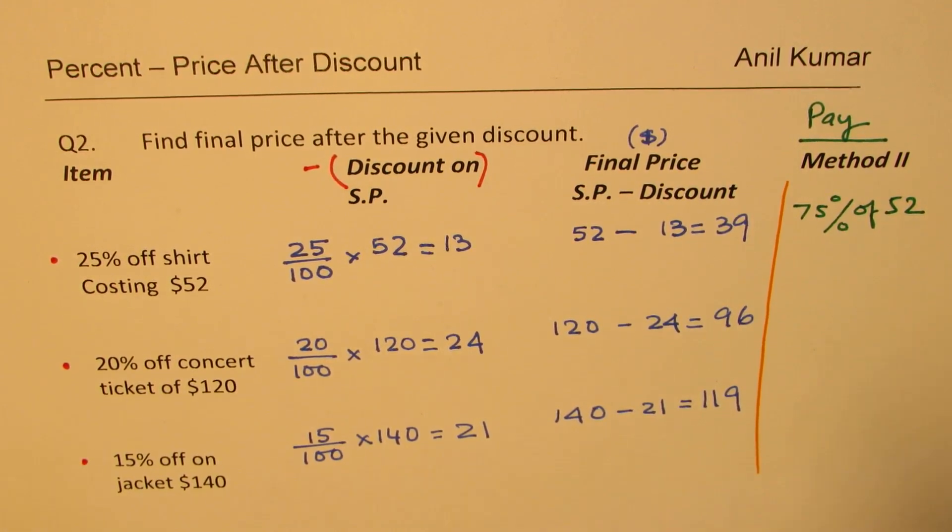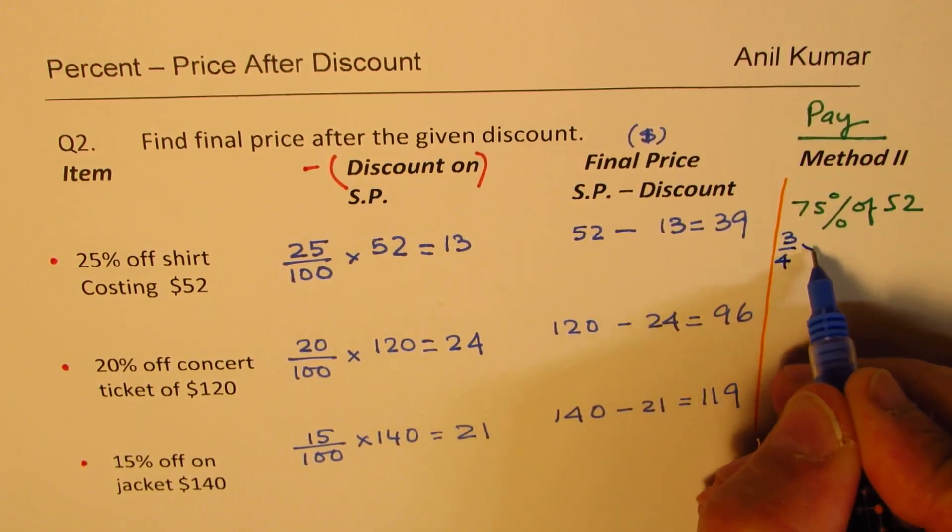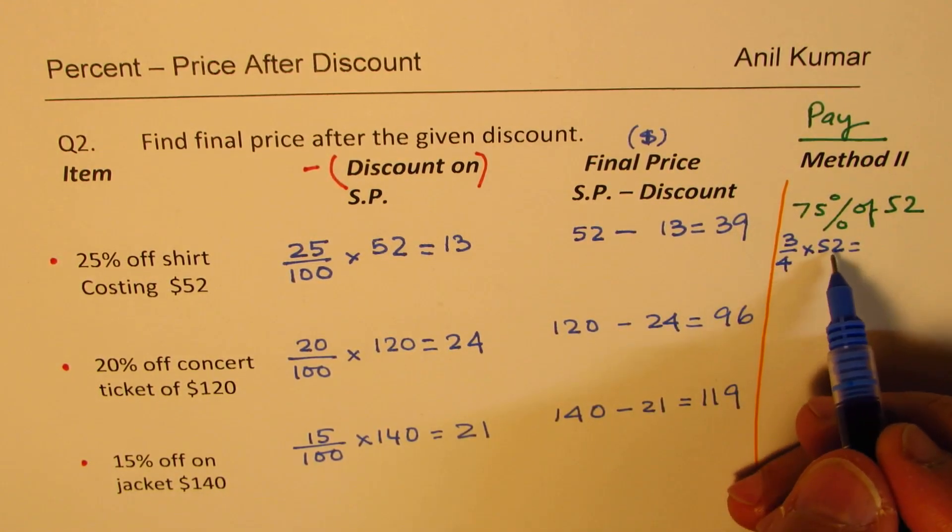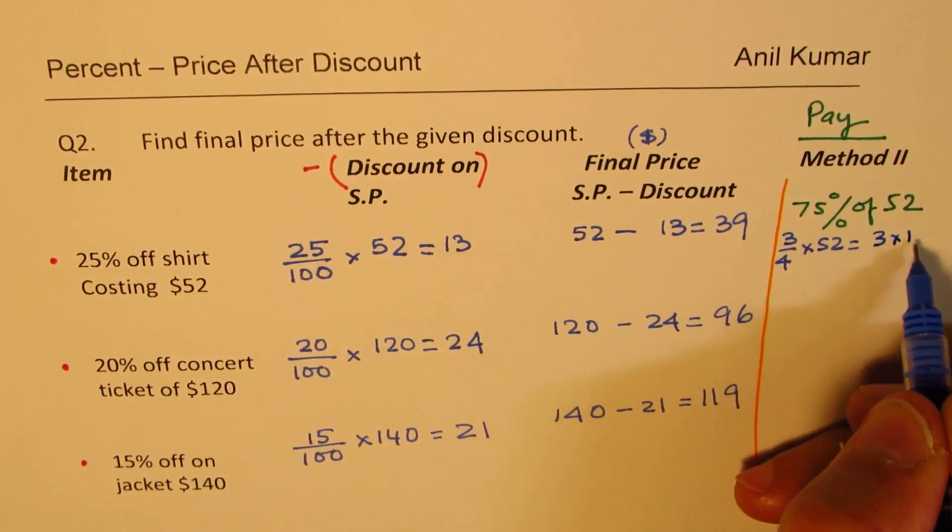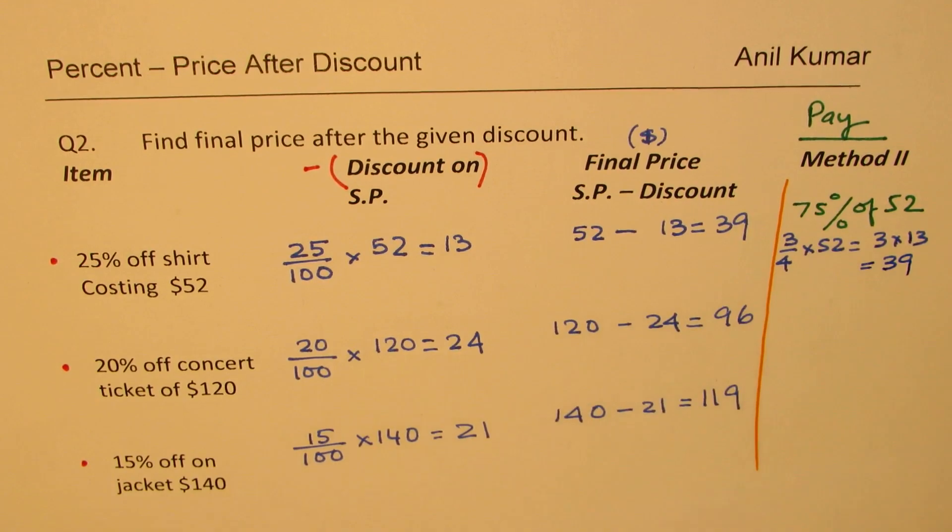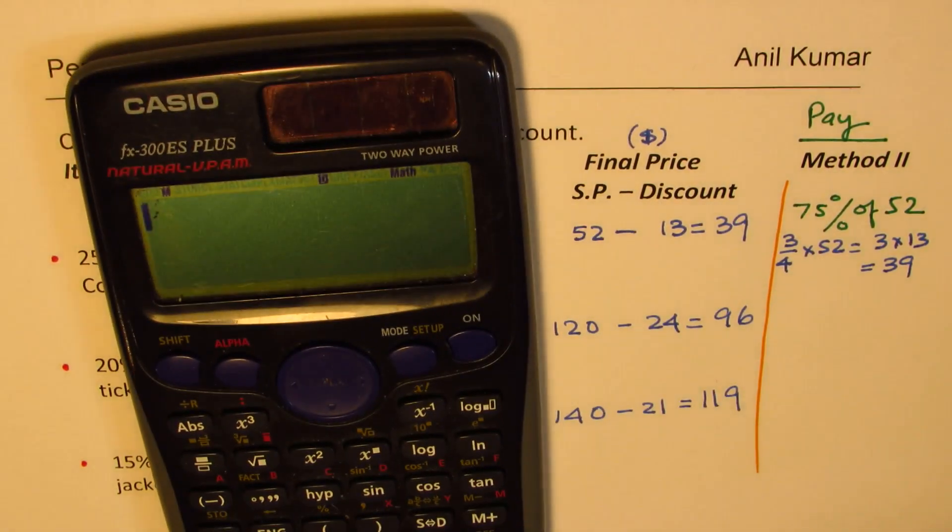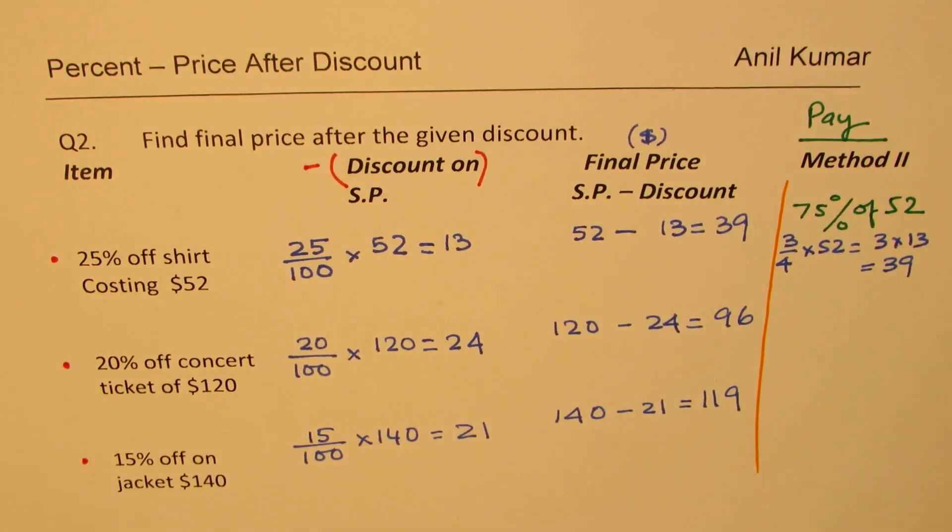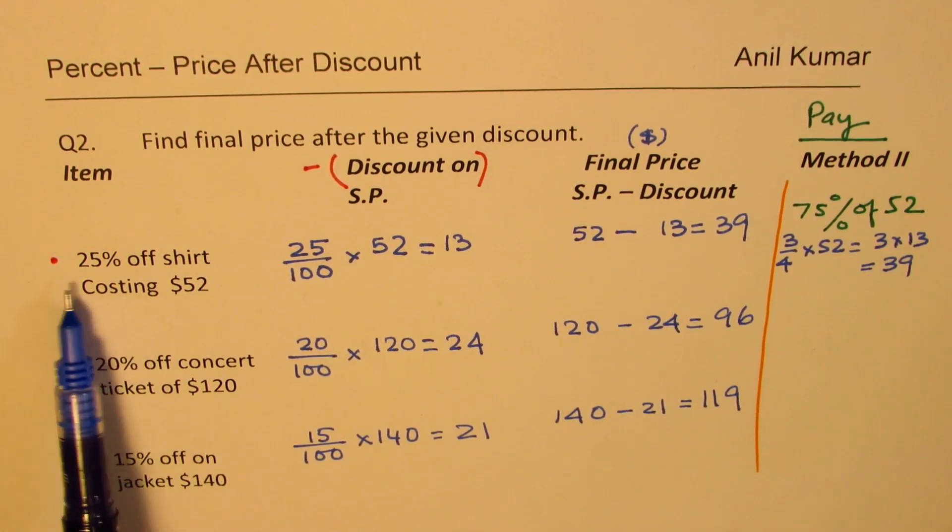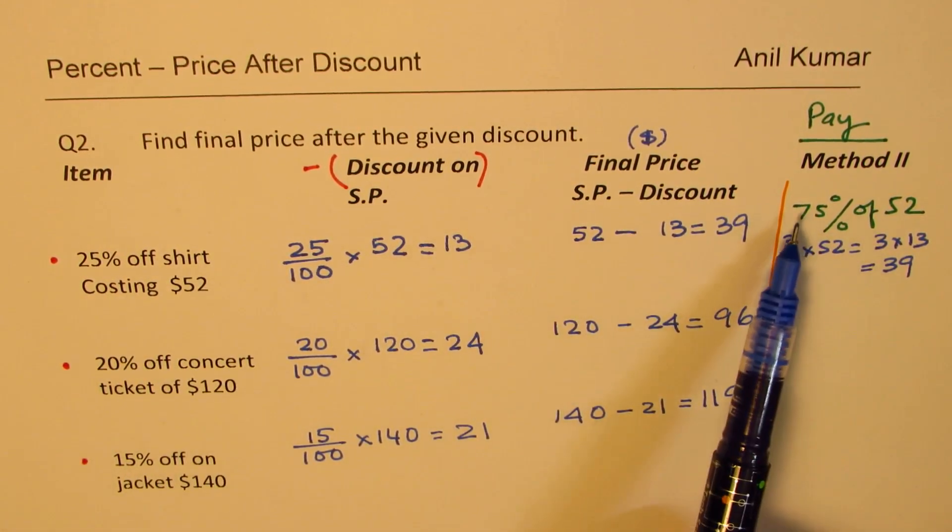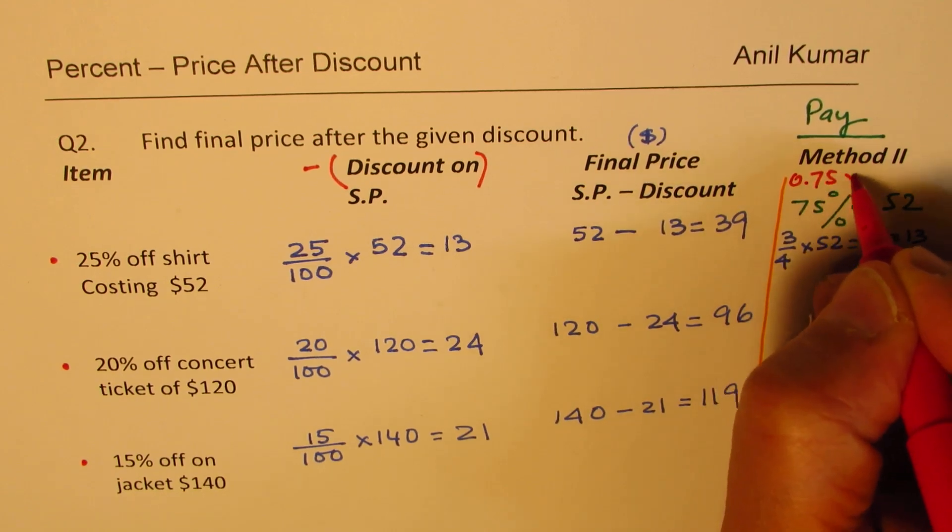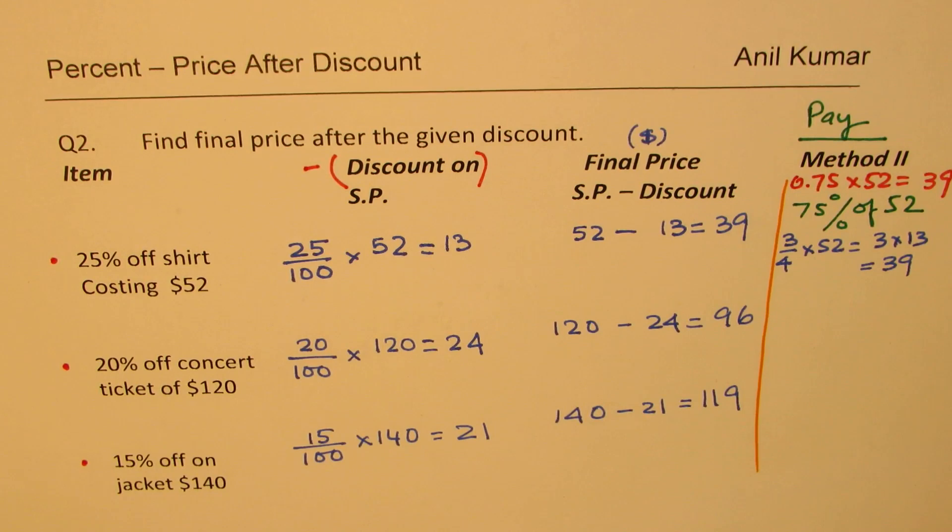Now, some of you who are good in fractions could do 75% means 3 over 4 times 52 and get your answer. So, in a game of cards, 4 players when they play, they get 13 each. So, it is 3 times 13, which is 39. Well, if calculator is allowed, no problems. 75% means 0.75 times 52. And you get your answer, 39. Is that correct? So, it is kind of a very fast calculation in a multiple choice test paper. So, 25% off costing 52 means 0.75 times 52. You get your answer straight away.